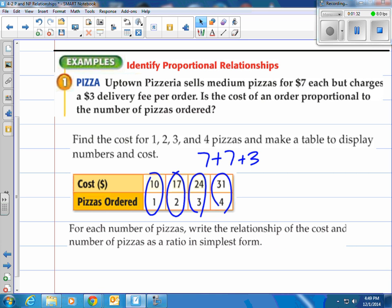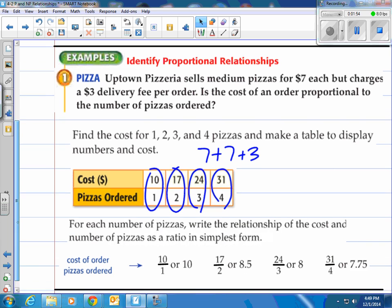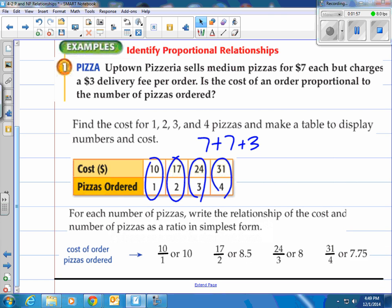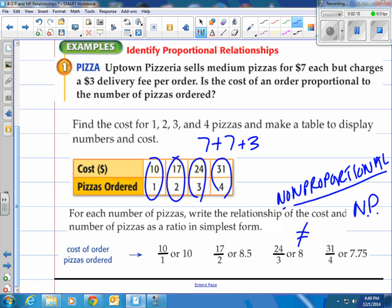Next, for each number of pizzas, write the relationship of the cost and the number of pizzas as a ratio in simplest form. You'll see I circled them. That's actually what you set up. Take the 10 and the one and make a ratio. 10 over 1, that equals 10. Take 17 over 2, that equals 8.5. 24 over 3, that equals 8. And 31 over 4, that equals 7.75. Are those the same? No, they are not. Therefore, since they are not the same, they're not equal, we call this non-proportional. Since that's a long word, I like to do NP, non-proportional.